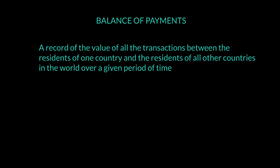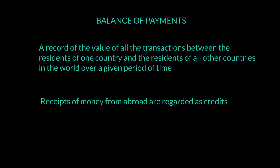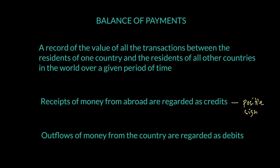When you look at money coming in — the receipts of money — we put it as a credit entry in the balance of payment, recorded with a positive sign. On the other hand, money that is being paid is recorded as a debit entry with a negative sign. So all positive signs mean money is coming in, and all negative signs mean money is flowing out.